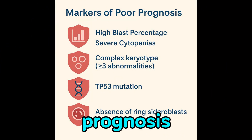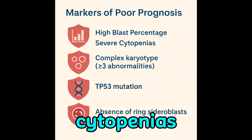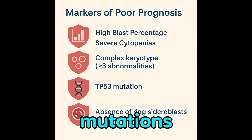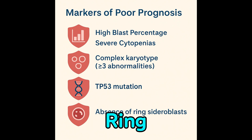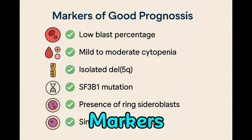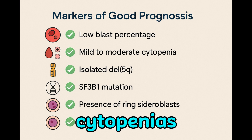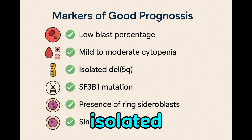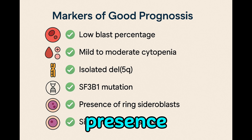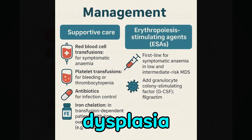Poor prognosis markers include high blast percentage, severe cytopenias, complex karyotypes, TP53 mutations, and absence of ring sideroblasts. Good prognosis markers include low blast percentage, mild cytopenias, isolated DEL5Q, SF3B1 mutation, presence of ring sideroblasts, and single lineage dysplasia.